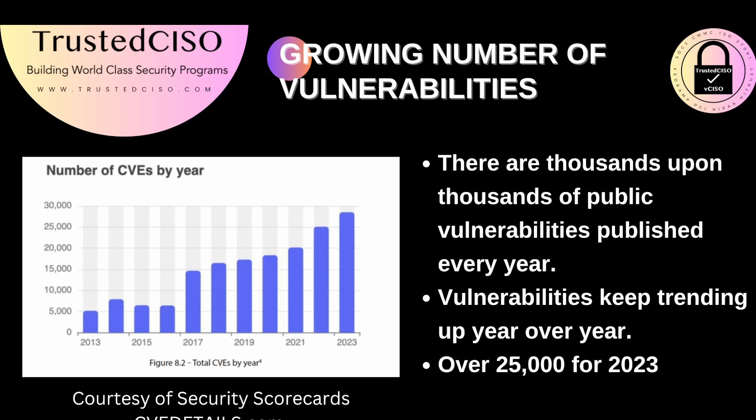Every year, thousands upon thousands of public vulnerabilities are published, highlighting the ongoing battle between security professionals and cyber threats. The number of reported vulnerabilities continues to trend upward year over year, signaling an increasing need for robust security measures. In 2023 alone, over 25,000 vulnerabilities have been documented. Additionally, there are vulnerabilities that products have which are never published — they're kept internal — so the real numbers are even higher.